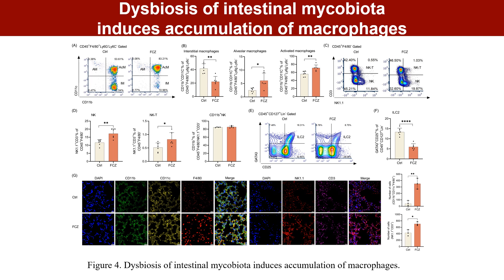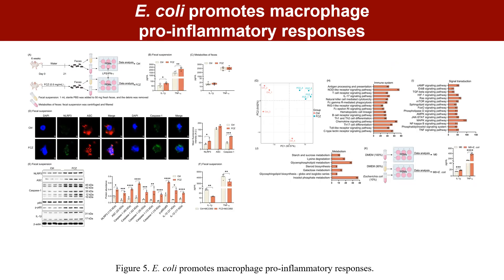To explore the underlying mechanism by which dysbiosis of intestinal microbiota aggravates lung inflammation during infection, we further analyzed changes of immune cells after fluconazole treatment and PMCQ2 infection. The immune cells in the lung were profiled using multi-parametric flow cytometry. Results highlight that fluconazole enhances lung inflammation during infection through activated macrophages. Mechanistically, E. coli increases the pro-inflammatory response of macrophages through the NLRP3 inflammasome and NF-κB signaling pathway.